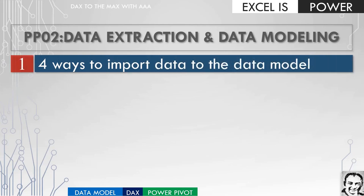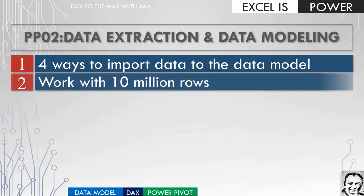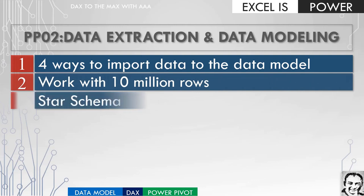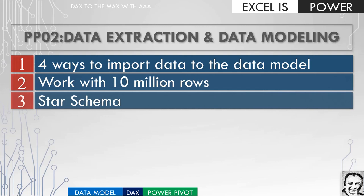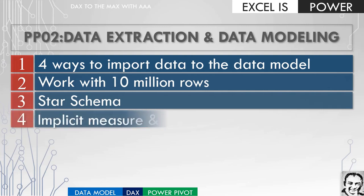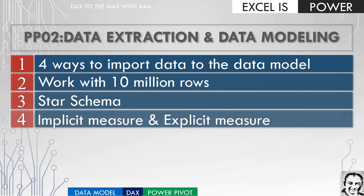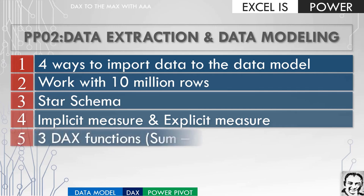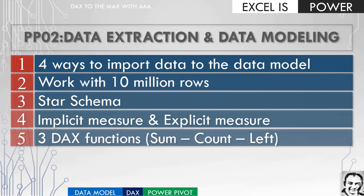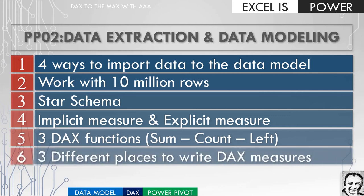First, we will cover four ways to import data to the data model. Next, we are going to look at how we can work with 10 million rows of data. Then we are going to discuss the star schema, and then look at implicit and explicit measures and understand the difference between both. Next will be three DAX functions: SUM, COUNT, and LEFT. Finally, we are going to look at three different places to write DAX measures inside Excel.